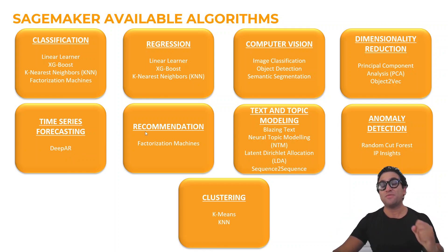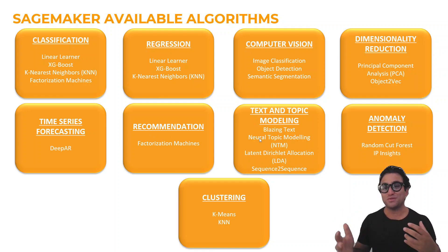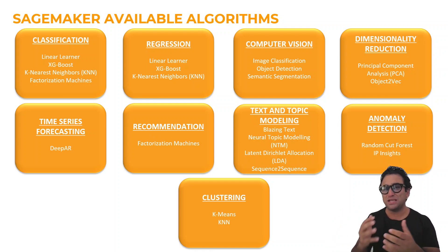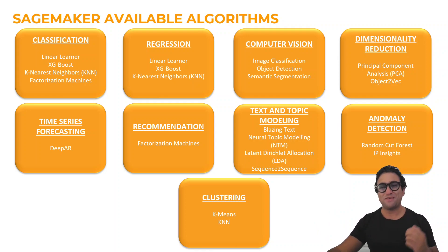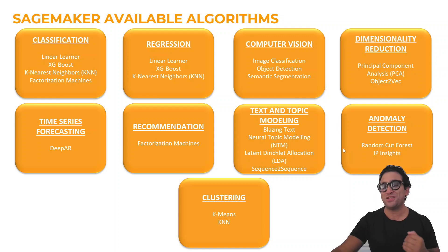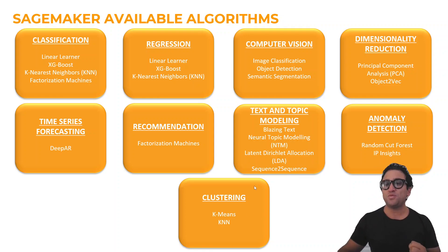We can also do recommendation using factorization machines. We can also do text and topic modeling — there are many algorithms available for text data: BlazingText, NTM or Neural Topic Modeling, LDA, and sequence-to-sequence. We can do anomaly detection using Random Cut Forest and IP Insights algorithms. And finally, we can do clustering using K-Means and KNN.